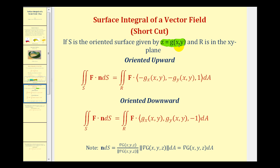If z is equal to G of x and y and r is in the xy plane, we can use this double integral over the region r to evaluate the surface integral if it's oriented upward and we can use this double integral over the region r if the surface is oriented downward. Notice the only difference between these two are the signs of the components as we see here.